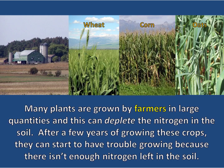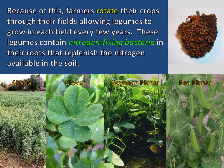Many plants are grown by farmers in large quantities, and this can deplete the nitrogen in the soil. After a few years of growing these crops, they can start to have trouble growing because there isn't enough nitrogen left. Because of this, farmers rotate their crops through their fields, allowing legumes to grow in each field every few years. These legumes contain nitrogen-fixing bacteria in their roots that replenish the nitrogen available in the soil.